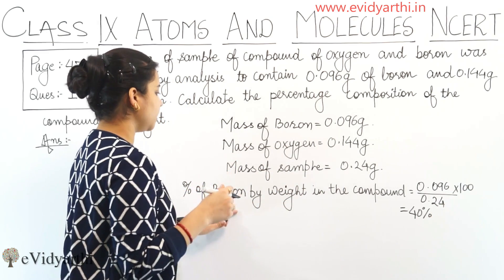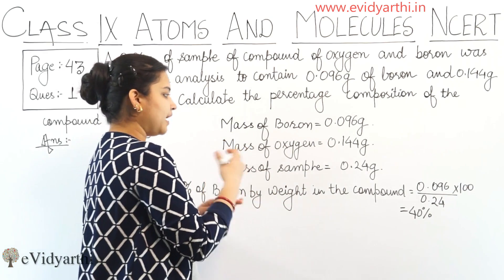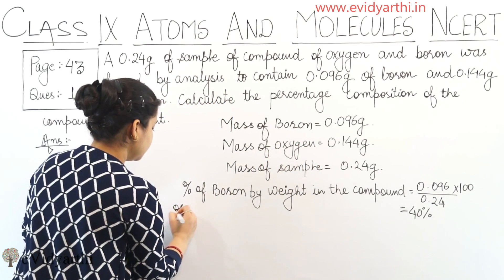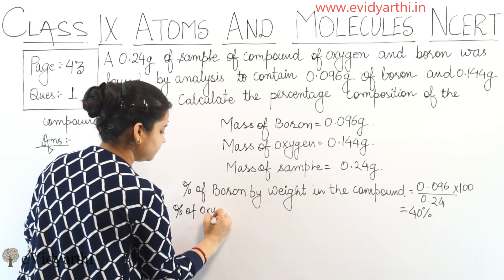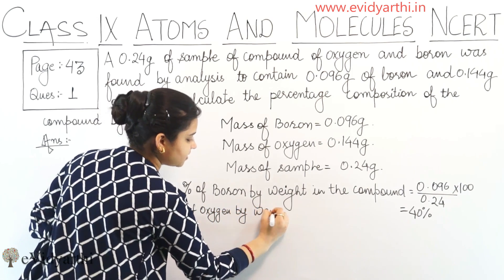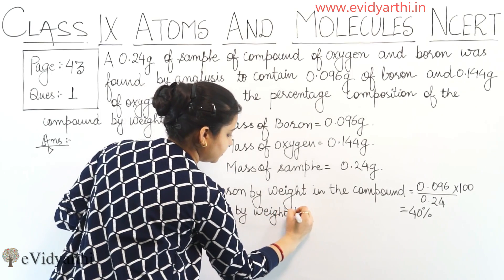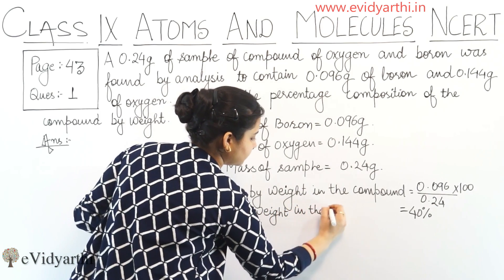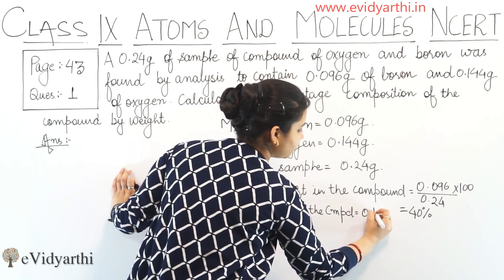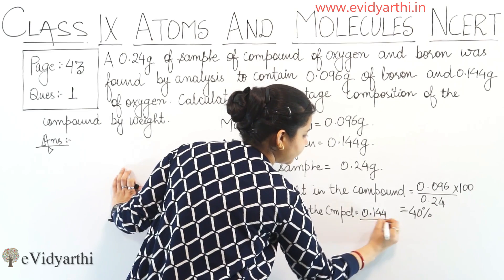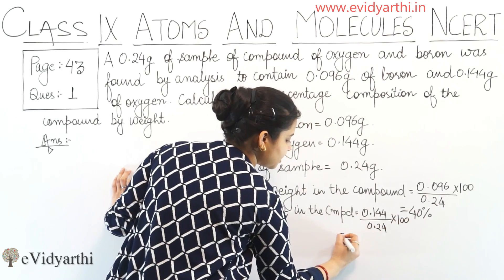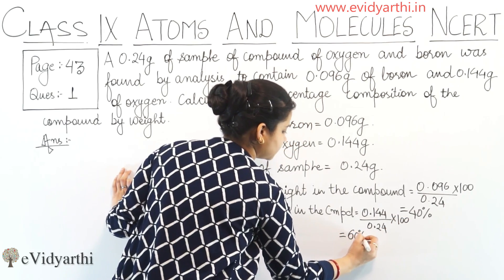Now we have the percentage of oxygen by weight in the compound. It would be equal to 0.144 divided by 0.24 into 100, which becomes equal to 60%.